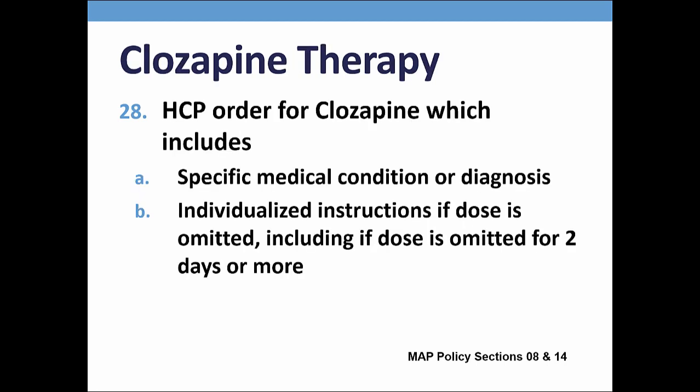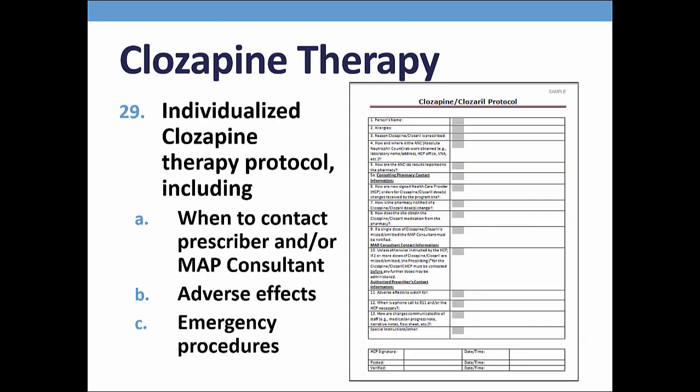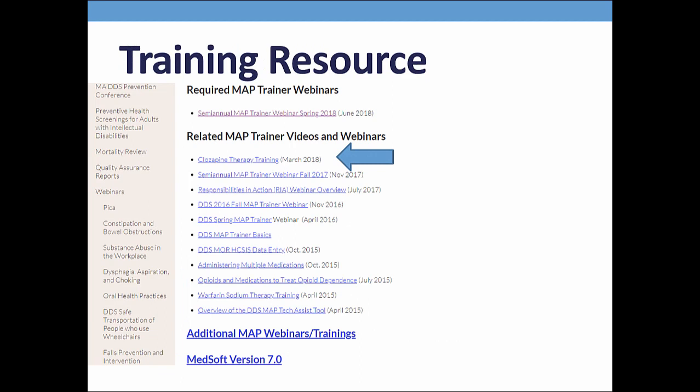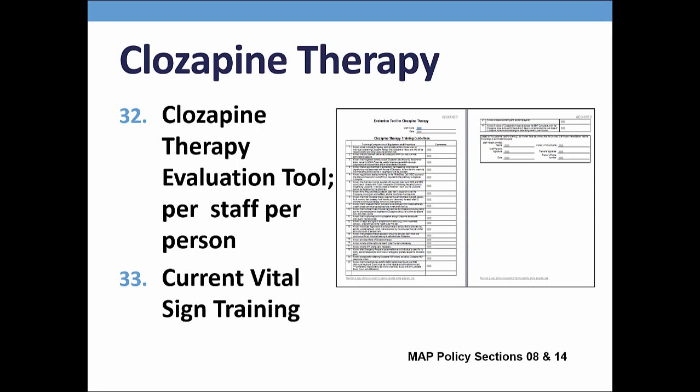Each person prescribed clozapine must have a supporting medical condition or diagnosis and instructions for staff to follow if a dose is omitted for two or more days. Per policy, each person prescribed clozapine must have a corresponding individualized clozapine therapy protocol. Protocols must be signed and dated by the HCP and posted and verified by staff. Certified staff must be trained in clozapine therapy and documentation of the training as listed on your screen must be maintained on site. A sample clozapine therapy training has been completed and is available online — look under related MAP trainer videos and webinars using the MAP-friendly URL. Each staff administering clozapine must have a completed individual-specific clozapine evaluation tool on site as part of the training materials.